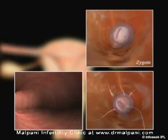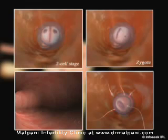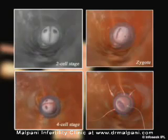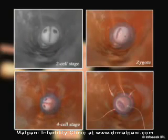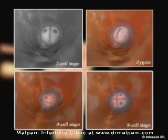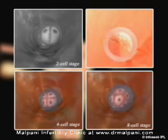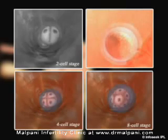The step next to this fusion is fission. The zygote starts dividing itself into multiples of two. It undergoes symmetrical division to form a 4, 8, 16-cell stage and finally becomes a cluster of cells resembling the mulberry fruit, and is called morula.